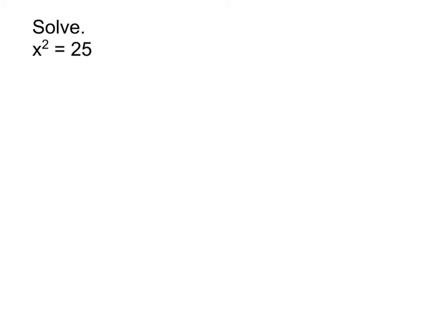When solving this, a lot of us just look at it and say, the answer must be 5 — that's easy. But if you just got an answer of 5, it's not entirely right. Because if I have x squared equals 25, what I'm doing to both sides is taking the square root of both sides. Taking the square root of x squared and the square root of 25 is what tends to make us think the answer is only x equals 5. But it's not.